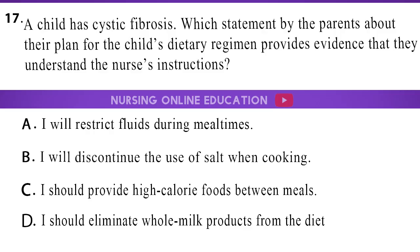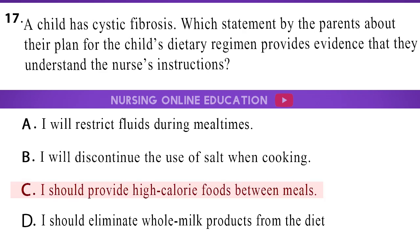Question 17. A child has cystic fibrosis. Which statement by the parents about their plan for the child's dietary regimen provides evidence that they understand the nurse's instructions? A. I will restrict fluids during mealtimes. B. I will discontinue the use of salt when cooking. C. I should provide high-calorie foods between meals. D. I should eliminate whole milk products from the diet. The answer is option C: I should provide high-calorie foods between meals.